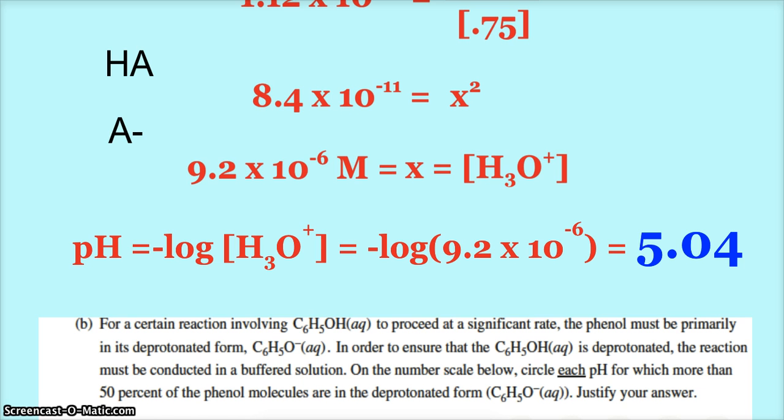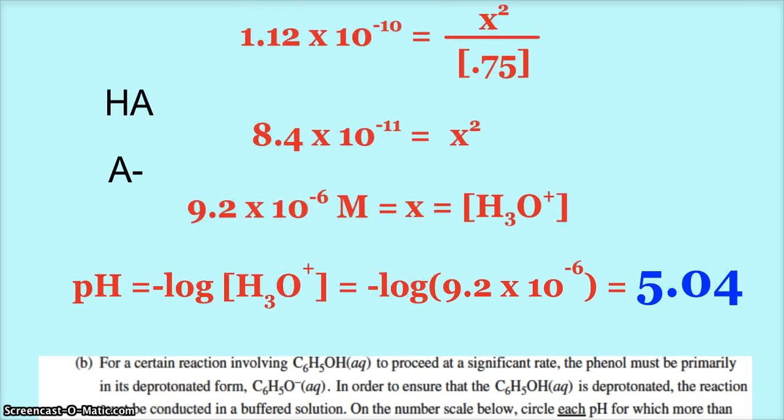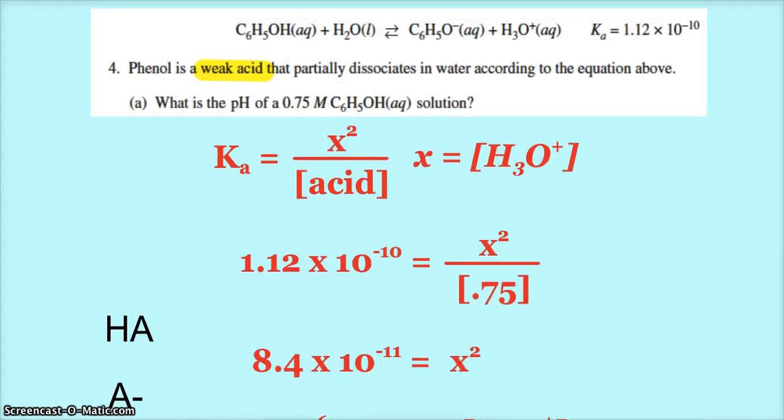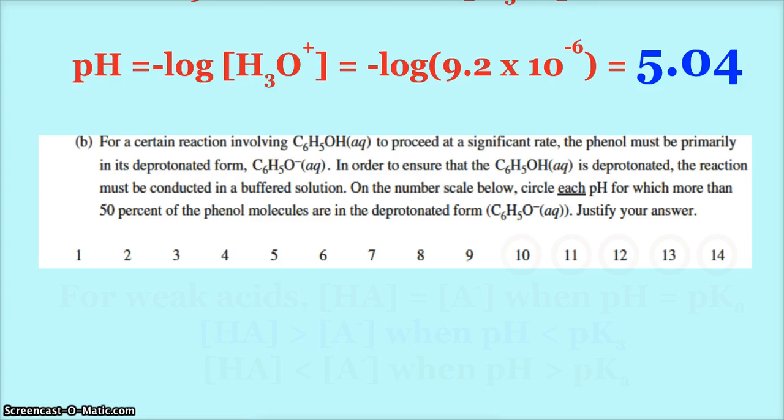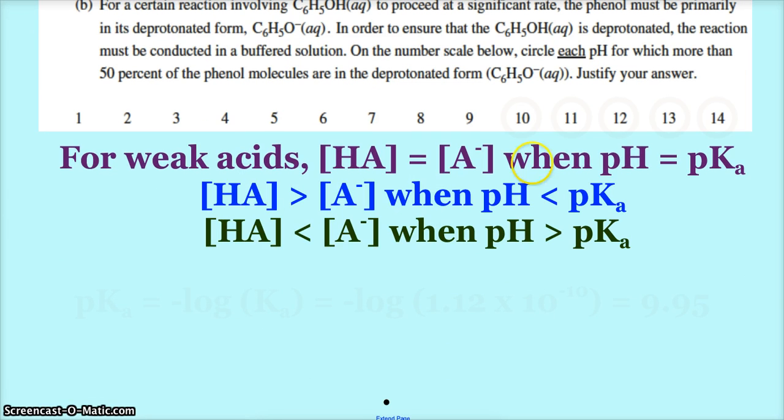Beyond the half equivalence point there's more of the A minus. So we need to know the pH beyond the half equivalence point. Hopefully something's ding ding ding because pH equals pKa at the half equivalence point. So for weak acids, HA equals A minus when pH equals pKa.